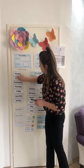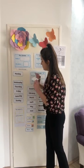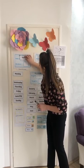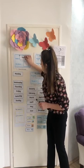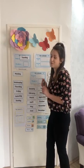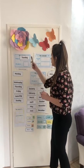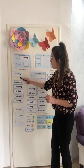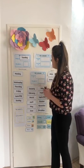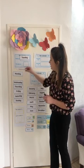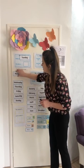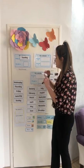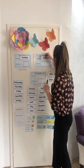So, we'll put Tuesday right here. Today is Tuesday, and Tuesday starts with the sound T. Yesterday, the day before Tuesday, is Monday. Yesterday was Monday, and Monday starts with the sound M.